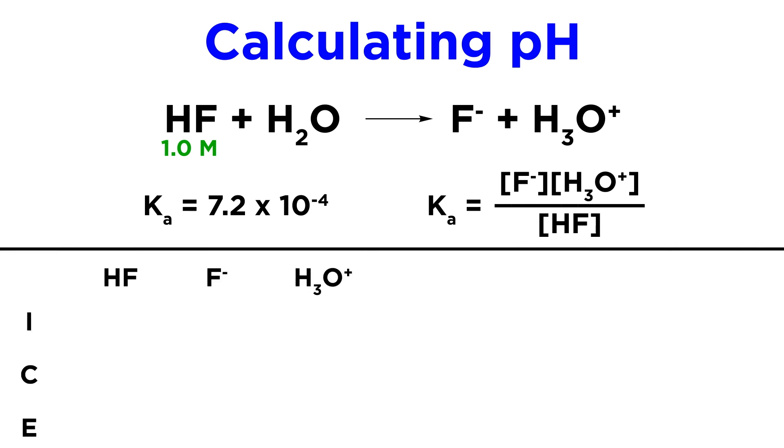Just like with other equilibria, we will have to construct an icebox, and use some simple algebra to get to an answer. For the initial concentrations, we have 1 molar for HF and 0 for the product, as this is before any ionization takes place. Then we have 1 minus X, as some HF will react.